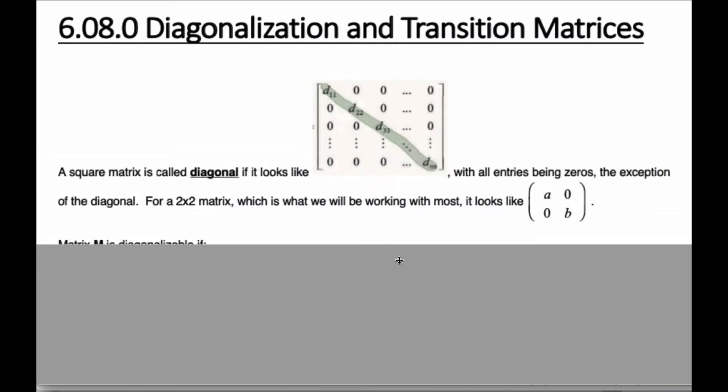So just to give you a quick definition. A diagonal matrix happens for square matrices, and it's called diagonal if this center diagonal has all values, and everything else is zeros. All these entries are zeros. And it could be for any square matrix.